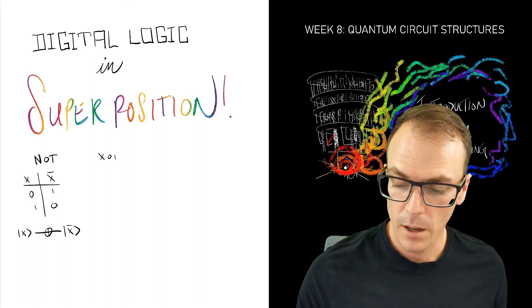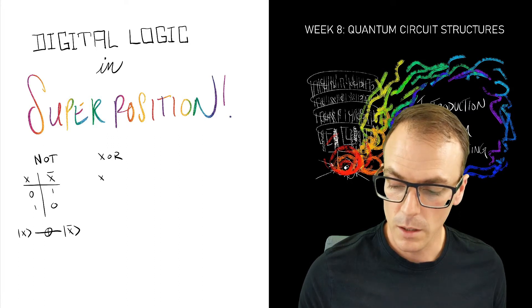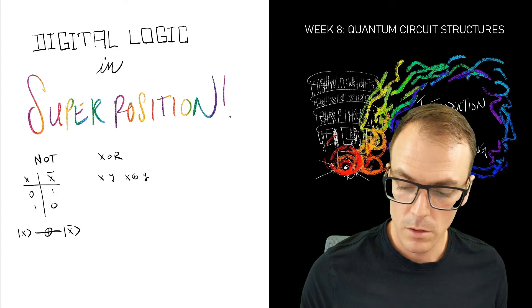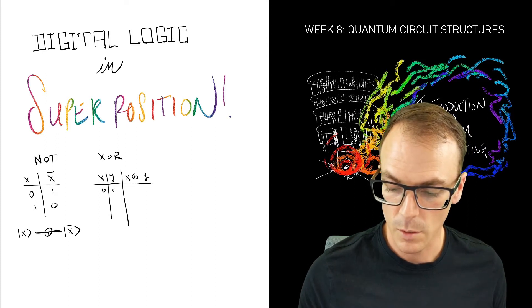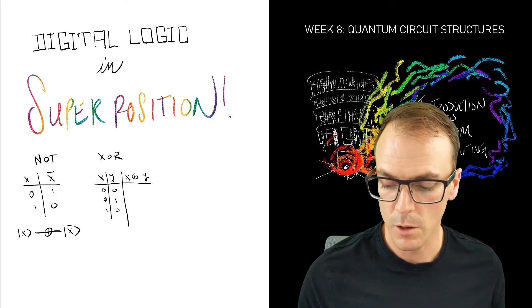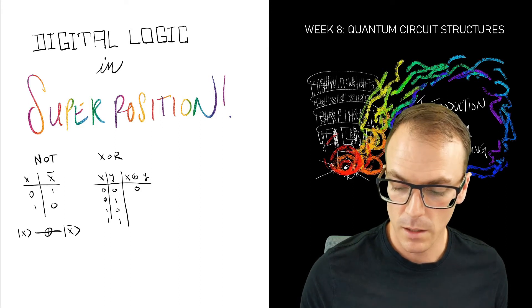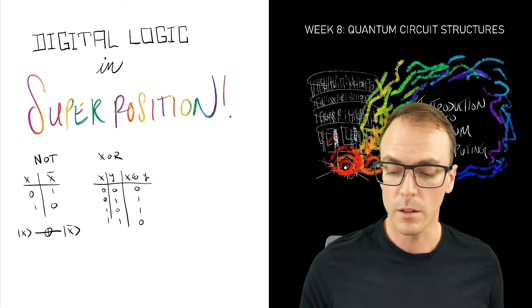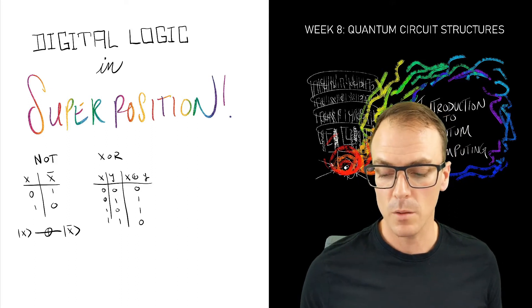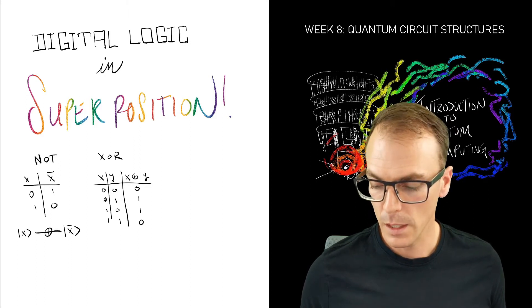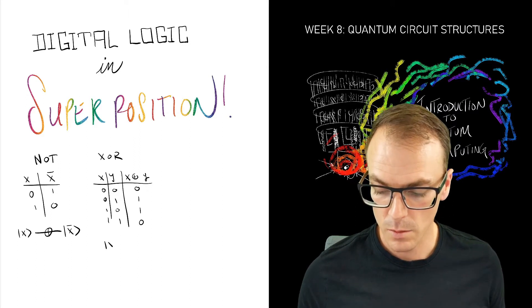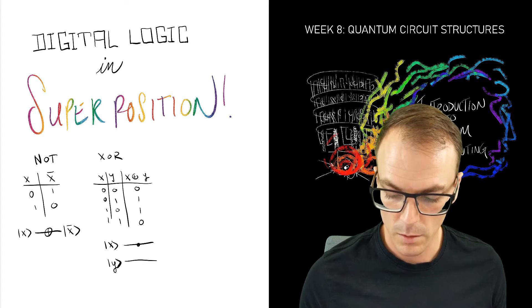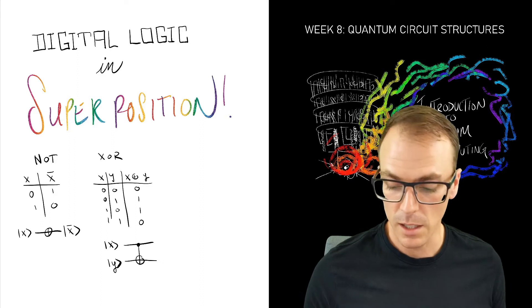We also had the exclusive OR which took two inputs, so we could have 0 0, 0 1, 1 0, or 1 1. The exclusive OR just looked at the parity or whether one or the other of the bits were true but not both, and this we could implement with our favorite two qubit gate, the CNOT gate.